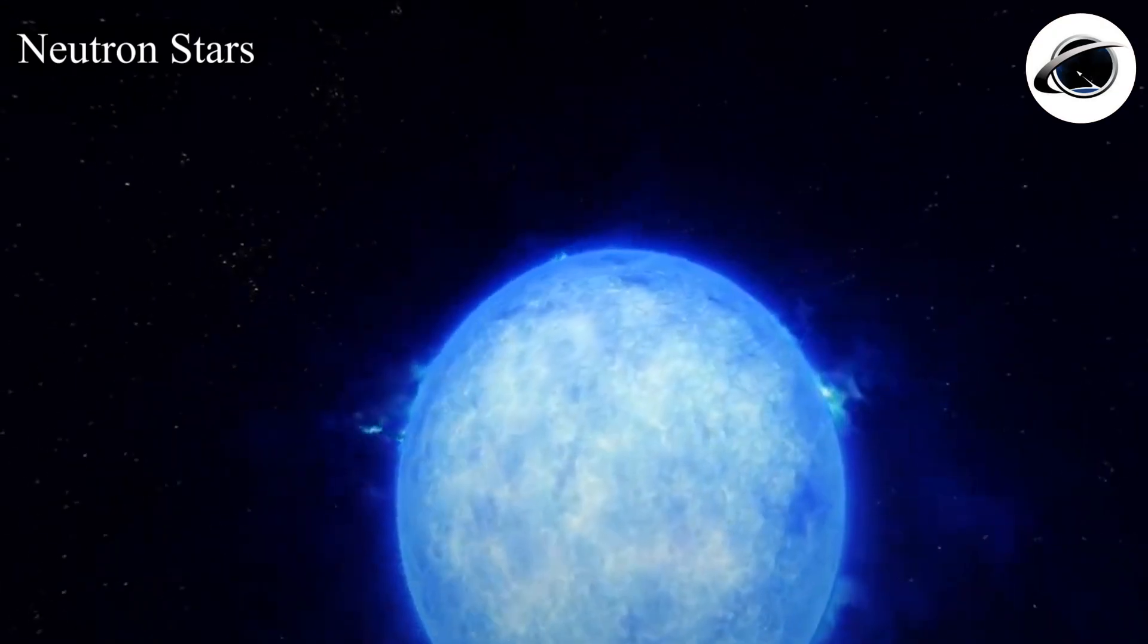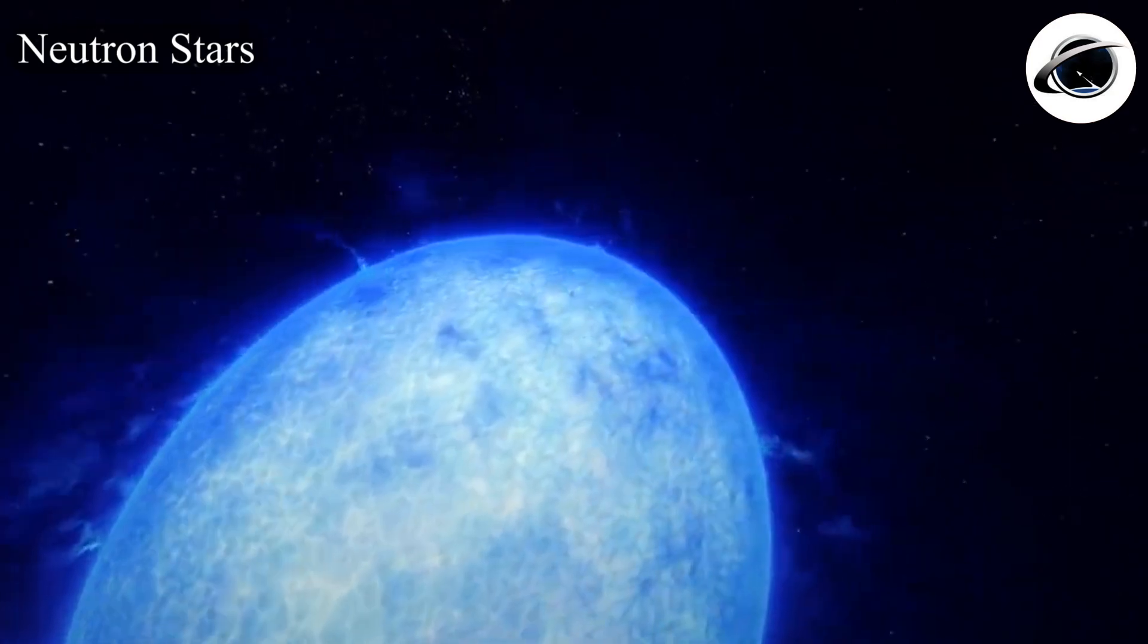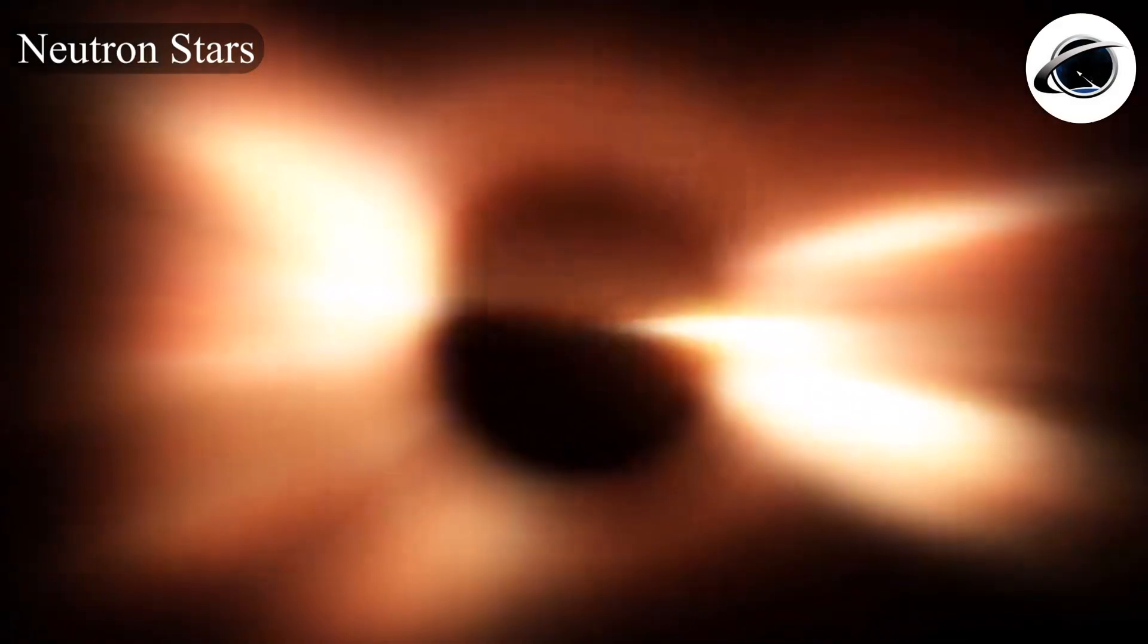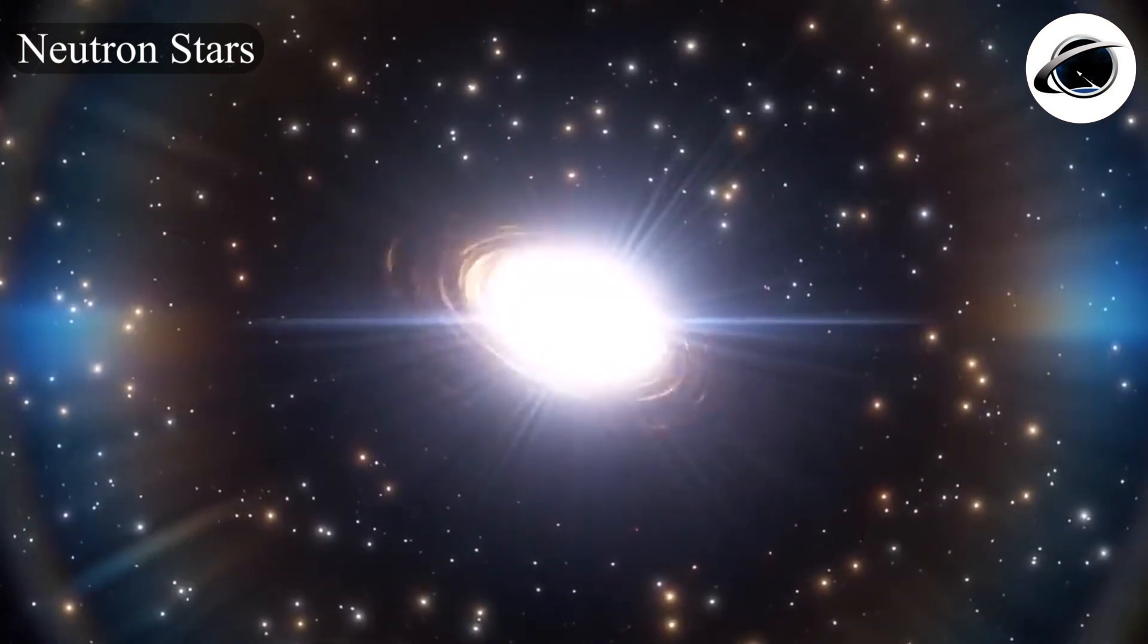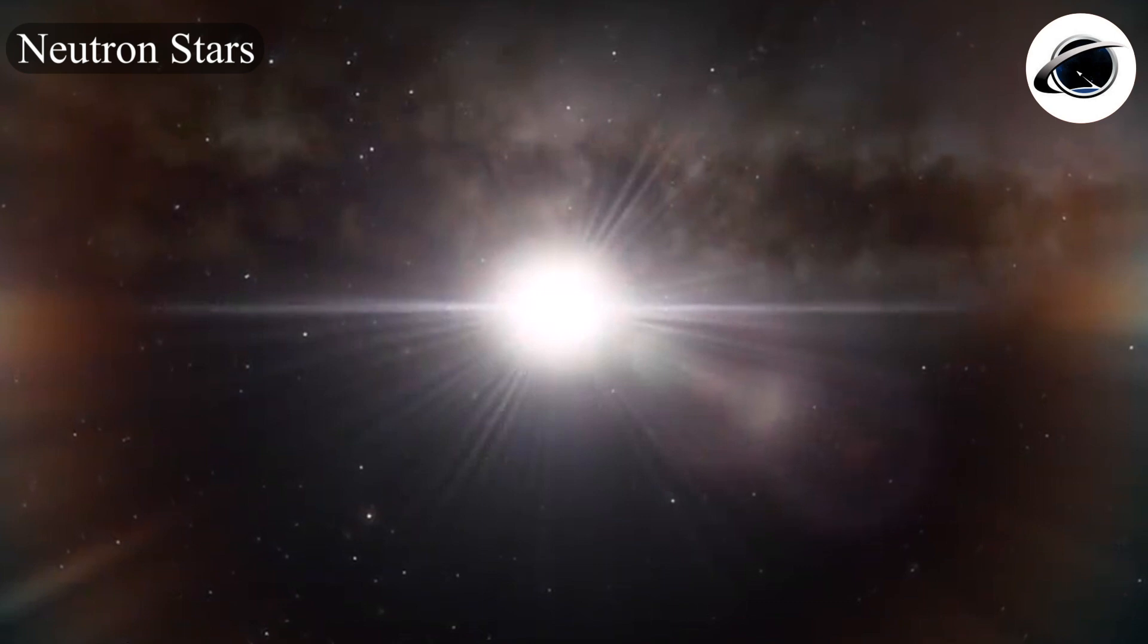Although there are several types of neutron stars, the most common and well-known is the pulsar. Pulsars are rotating neutron stars observed to have poles of radiation. They have very strong magnetic fields which funnel jets of particles out along the two magnetic poles.